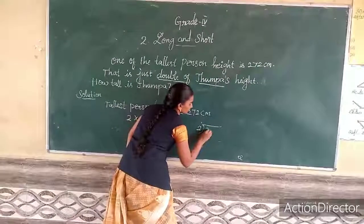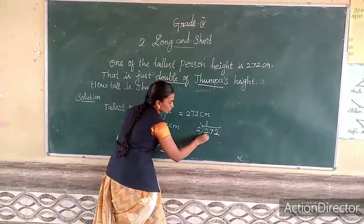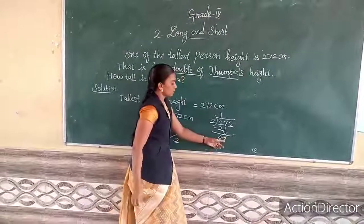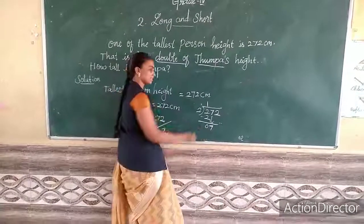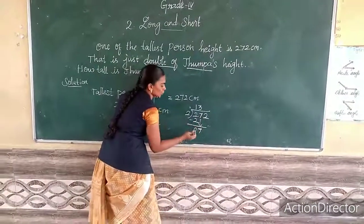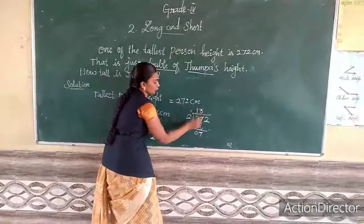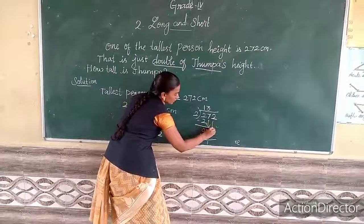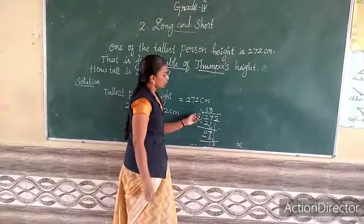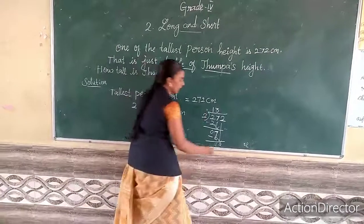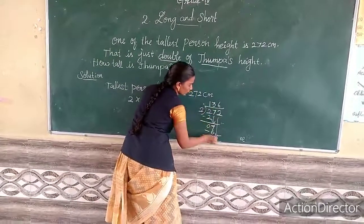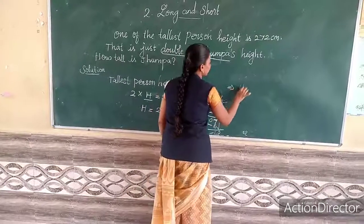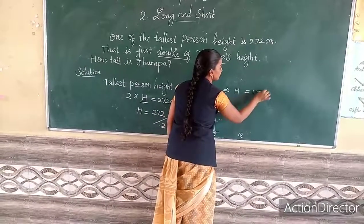Now I am going to divide that. 2 into 2 is 1. 2 minus 2 is 0. Bring down the 7. How many 2s will make 7? 2 threes are 6. 7 minus 6 is 1. Bring down the 2, making 12. How many 2s will make 12? 2 sixes are 12. 12 minus 12 is 0. So the height of Juma is 136 centimeters.